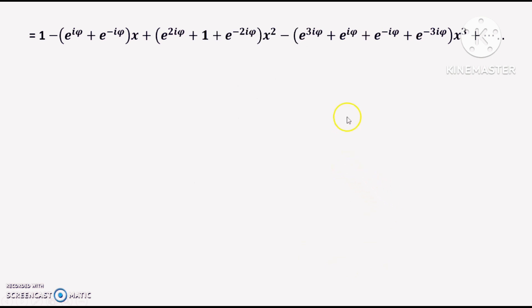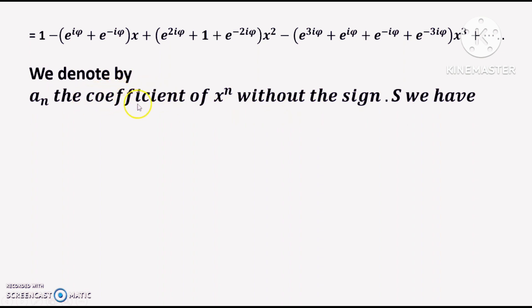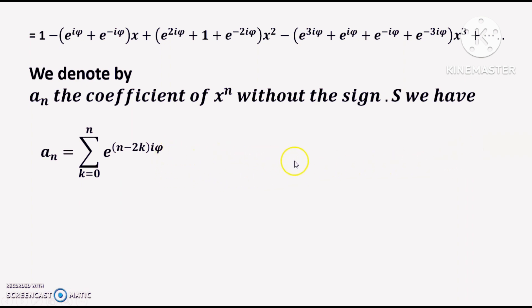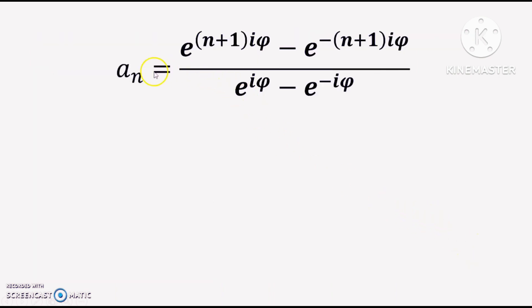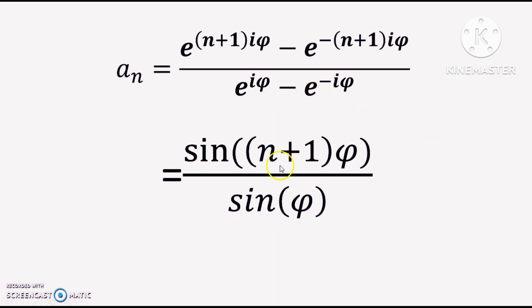This total product can be written as a power series, and we denote a_n as the coefficient of x^n. We have a_n = Σ(k=0 to n) e^((n-2k)iφ) = e^(niφ) Σ(k=0 to n) e^(-2kiφ). This simplifies, and the value equals sin((n+1)φ)/sin φ, because sin φ = (e^(iφ) - e^(-iφ))/(2i).